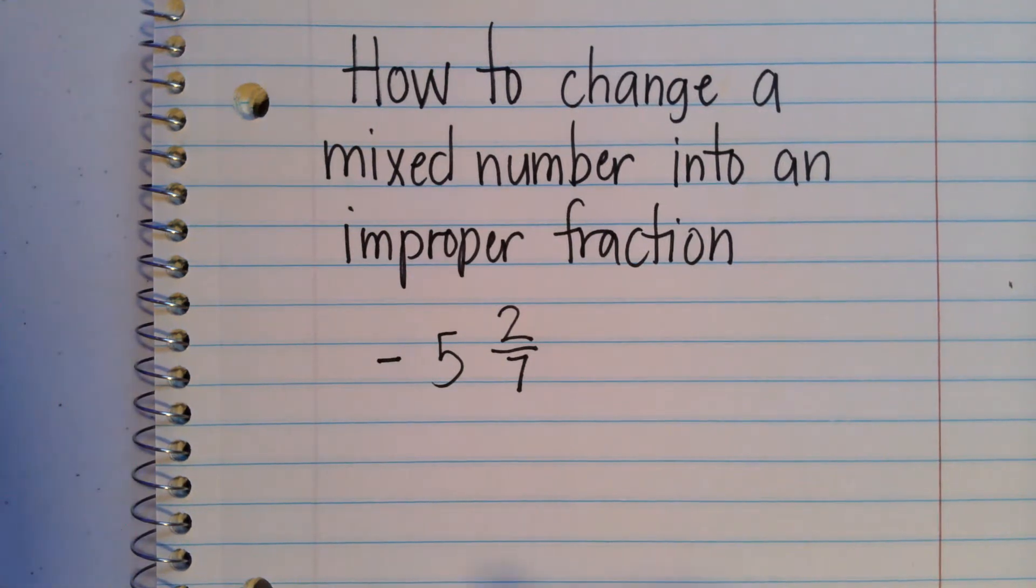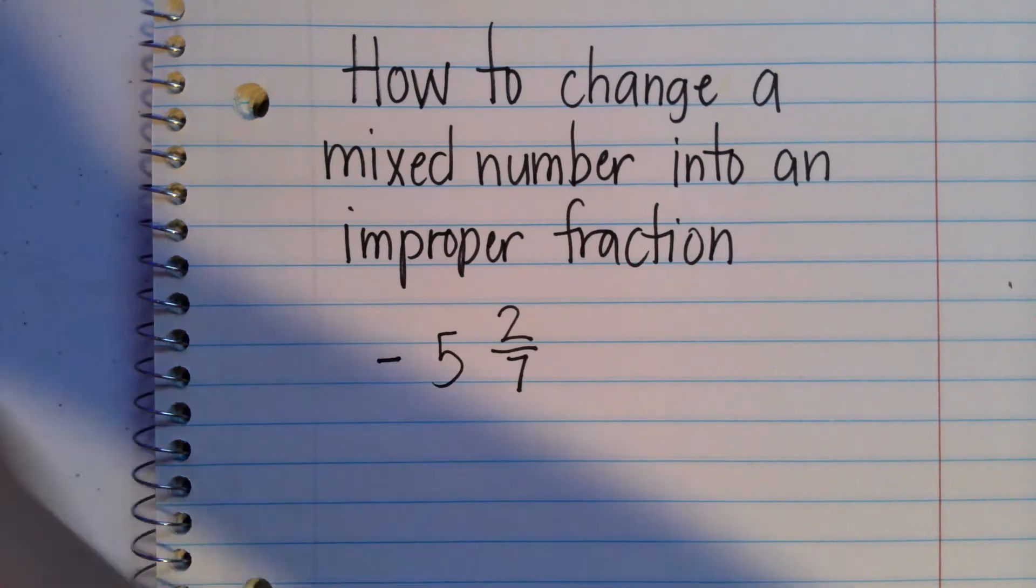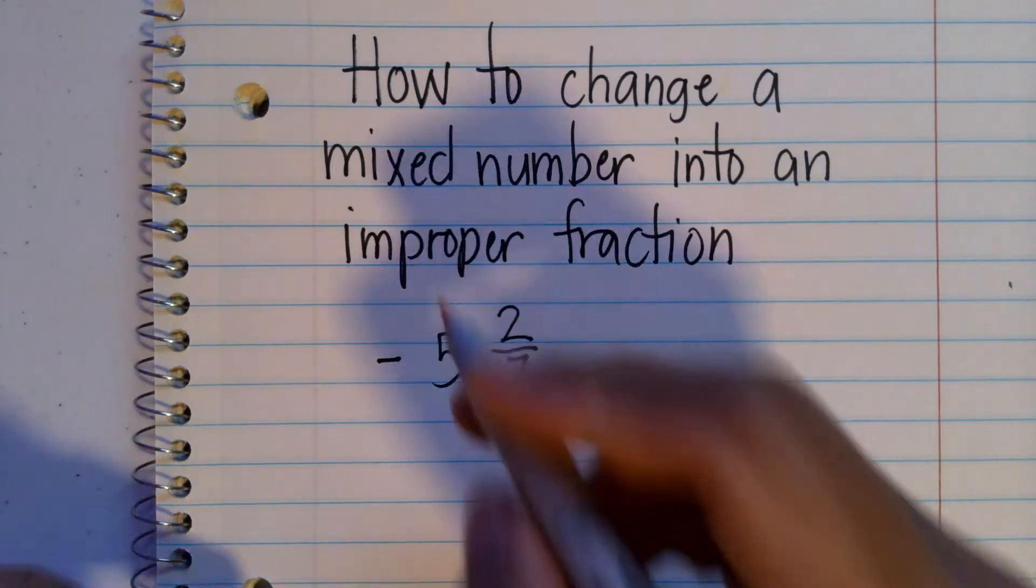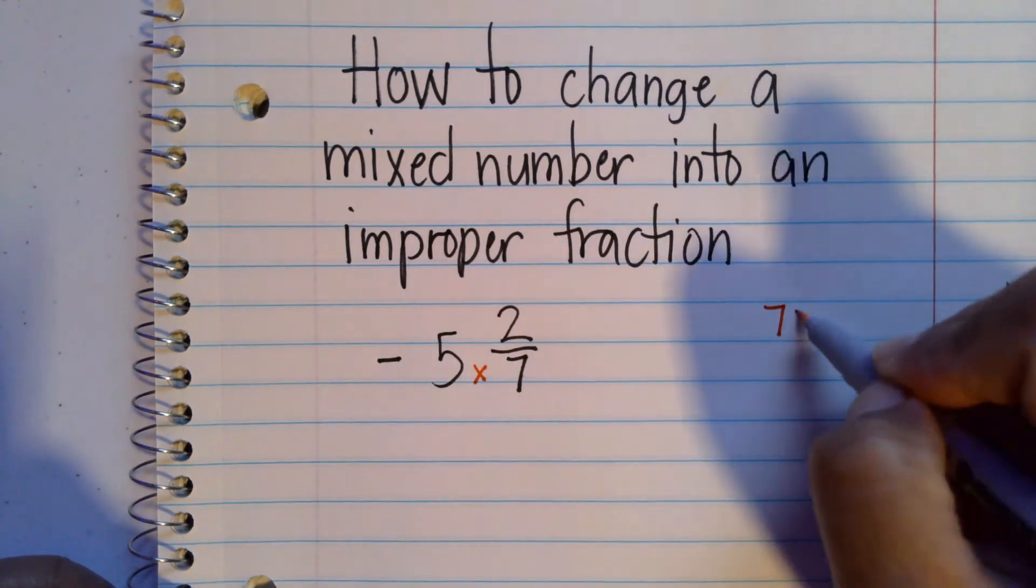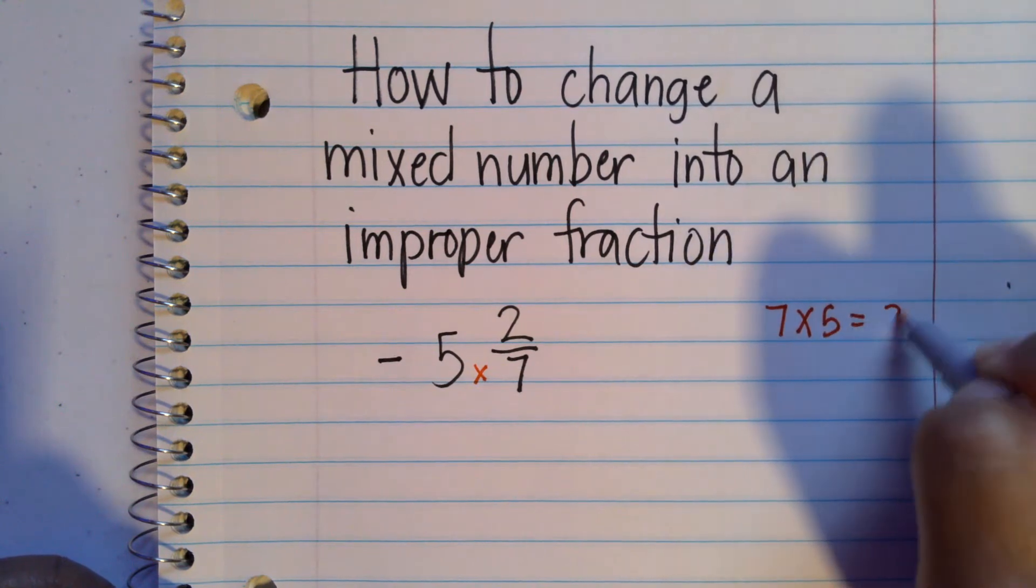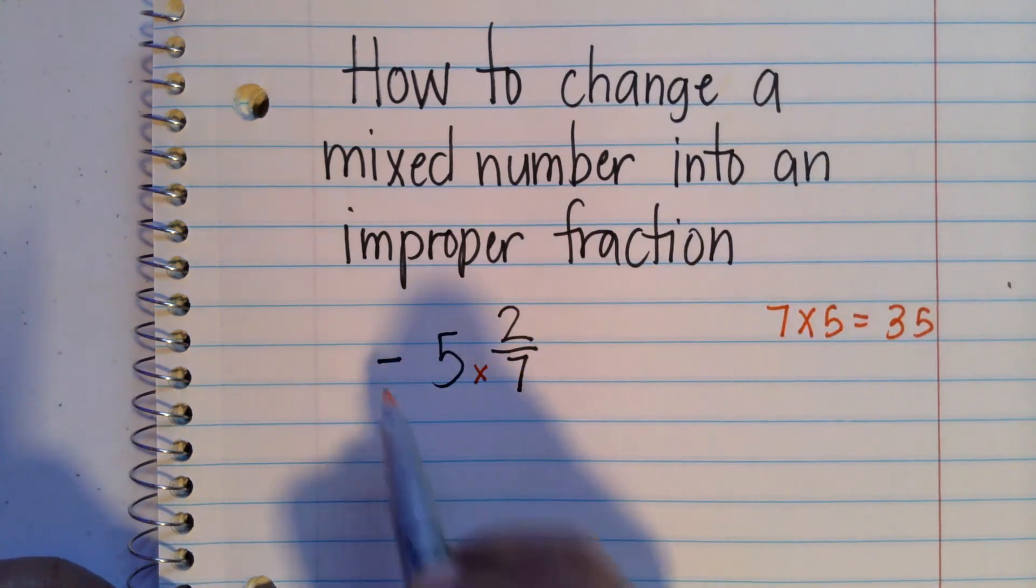When you are changing a mixed number, whether it is a positive mixed number or a negative mixed number, all you have to do is simply multiply the whole number by the denominator. So you'll have 7 times 5 is 35. At this point, you ignore the sign.